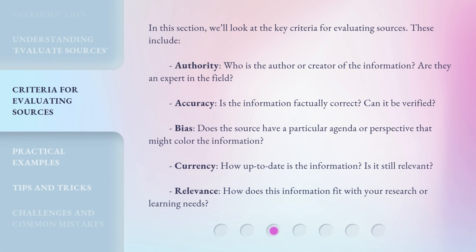In this section, we'll look at the key criteria for evaluating sources. These include authority — who is the author or creator of the information, and are they an expert in the field? Accuracy — is the information factually correct and can it be verified? And bias — does the source have a particular agenda or perspective that might color the information?